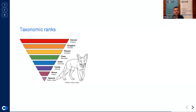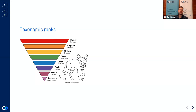An important thing to note is that with the 16S data we're using today, the lowest taxonomic rank we can confidently assign is the genus level. Below the genus level — at species or strain level — there's simply not enough diversity in the 16S gene to confidently say a read came from one species versus another. So we'll be doing all of our taxonomic assignments to the genus level.